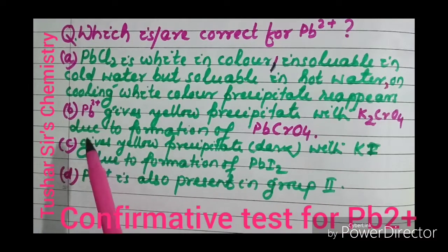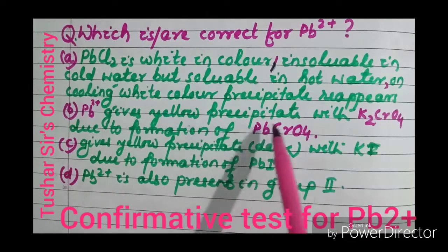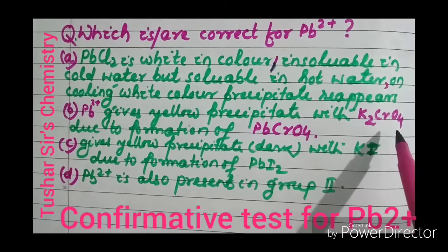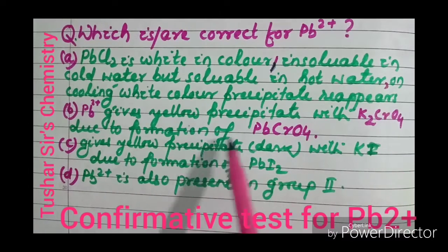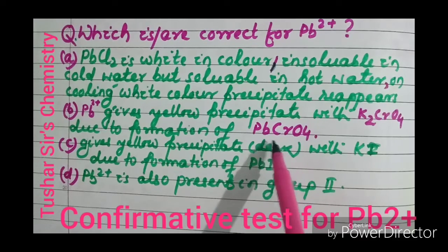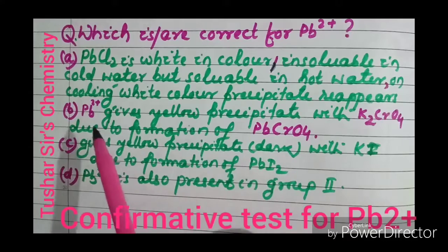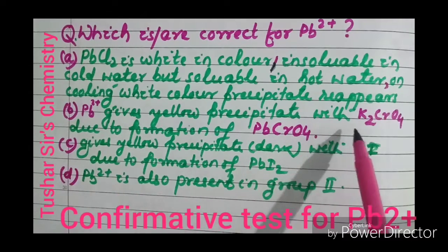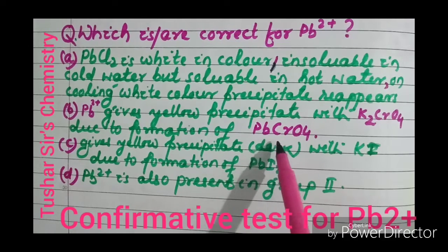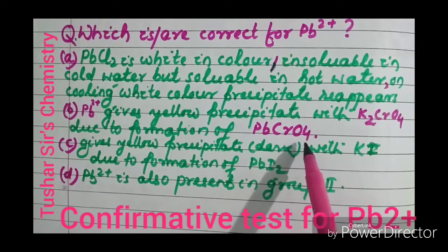Next, Pb²⁺ gives a yellow precipitate with potassium chromate (K₂CrO₄) due to the formation of PbCrO₄. PbCrO₄ is a bright yellow precipitate. When Pb²⁺ is treated with potassium chromate, it gives a bright yellow precipitate of PbCrO₄.